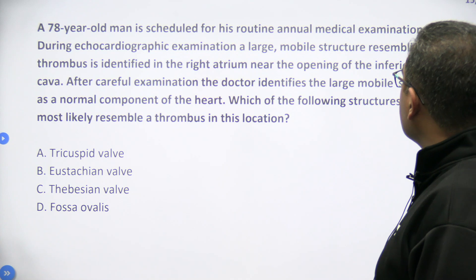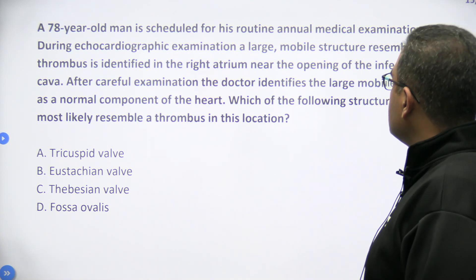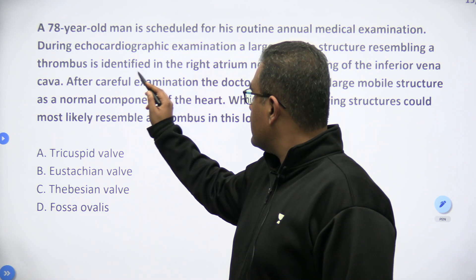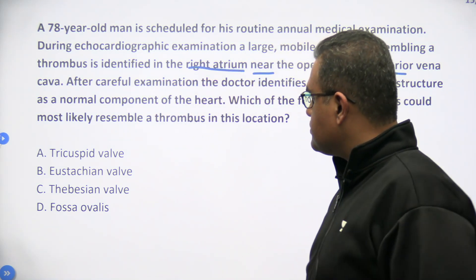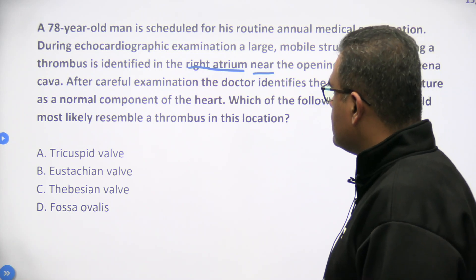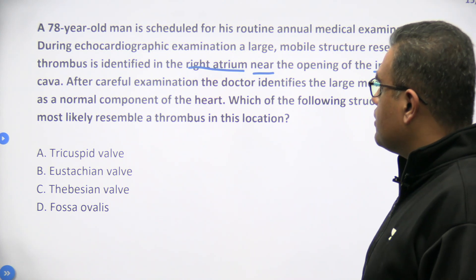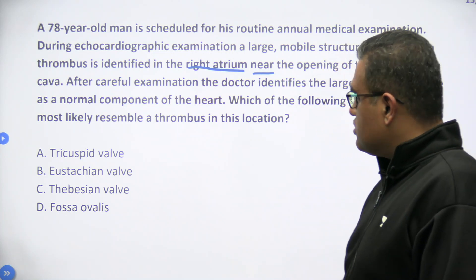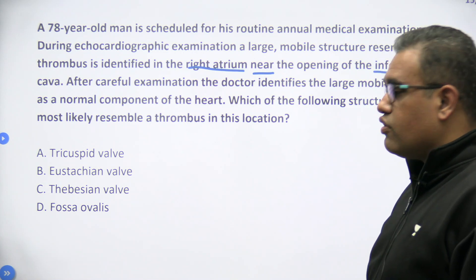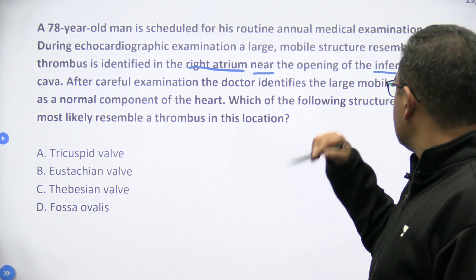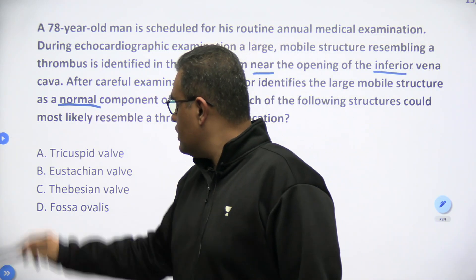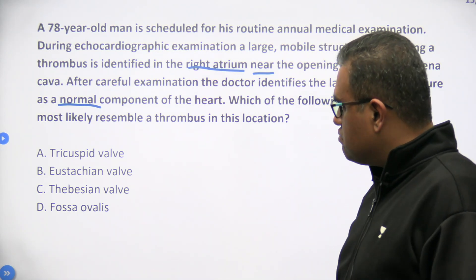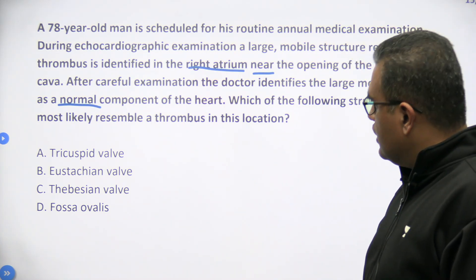A 78-year-old is scheduled for his routine annual medical examination. During echocardiographic examination, a large mobile structure resembling a thrombus is identified in the right atrium near the opening of the IVC. After careful examination, the doctor identifies the large mobile structure as a normal component of the heart. Which of the following structures could most likely resemble a thrombus in this location?